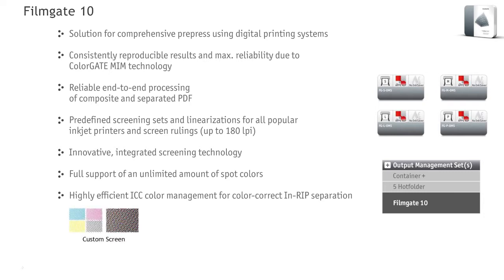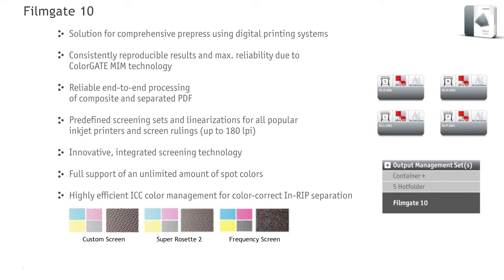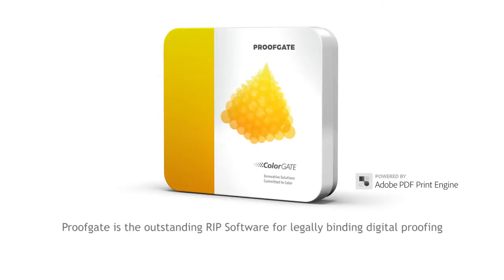Custom Screen: free definition of screen angles, dot-forms and line resolutions. SuperRowSet 2: sharp-edged, homogenous printed images resulting from screen angles of the highest precision. Frequency Screen: frequency-modulated screen with controllable dot size. Hybrid Screen 2 combines the advantages of the two screen technologies SuperRowSet 2 and Frequency Screen.